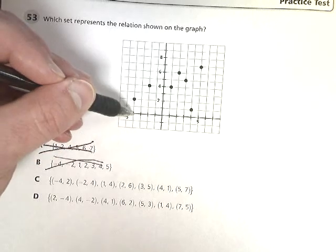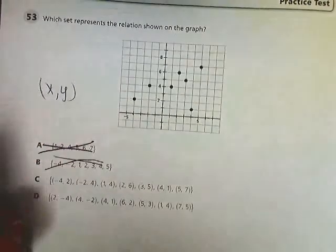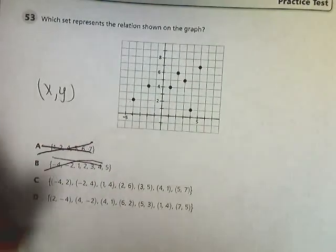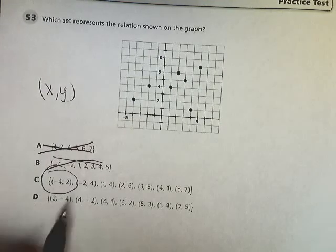So this point is negative 4, and then positive 2. So my first one I'm looking for is negative 4, positive 2. This one has it, this one does not.